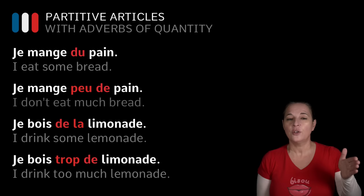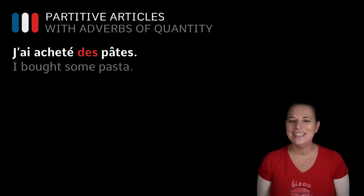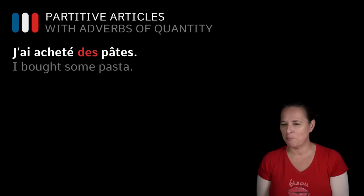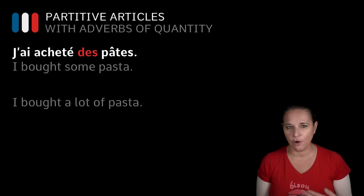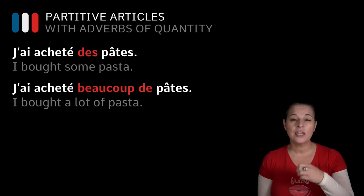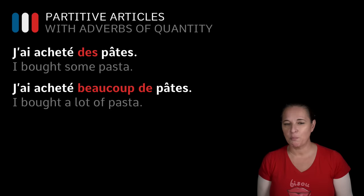Let's have a look at what happens when we use DES and want to say 'a lot'. 'J'ai acheté des pâtes' — I bought some pasta. We want to say I bought a lot of pasta: 'J'ai acheté BEAUCOUP DE pâtes.' And by the way, you will never say 'beaucoup DES' — ever. You always say 'beaucoup DE' — a lot of. 'J'ai acheté beaucoup de pâtes.'